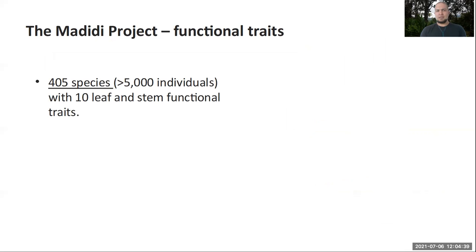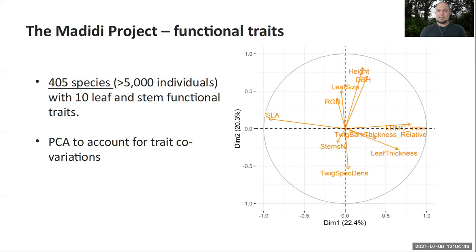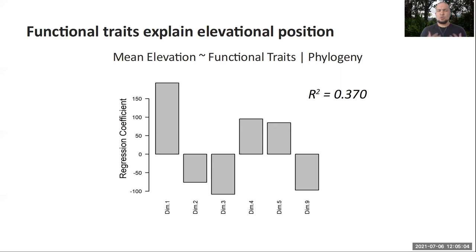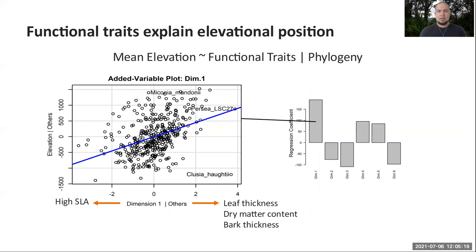Additionally, for each species we have measured a number of different functional traits, which can potentially represent some of the adaptations necessary to survive in these different environmental conditions. We used a principal component analysis to summarize that variation in functional traits into new dimensions that account for correlations between these different traits. We find that about 40% of the variation in elevation is explained by functional traits.